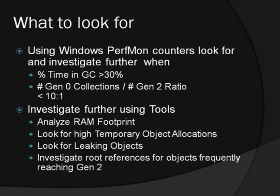Once you've identified that there's a possible memory problem, you really need to use tools to get to the bottom of it — to look at the RAM footprint of the application, to look at high temporary object allocation, and also to look for leaking objects. Investigating root references for objects frequently reaching Gen2 is also an extremely useful technique, but using tools is the key to finding the issue.